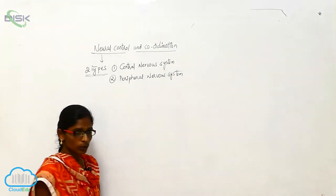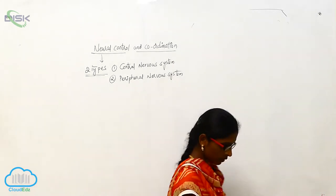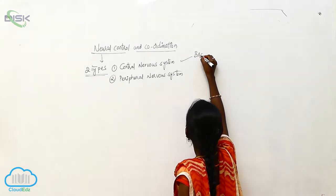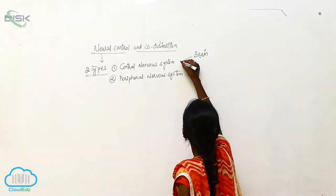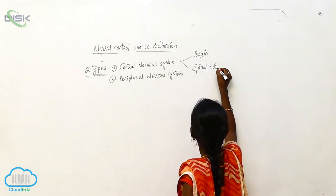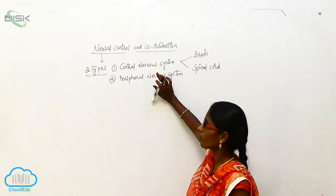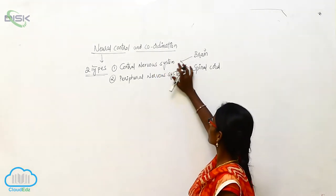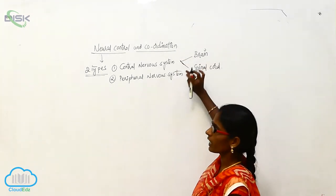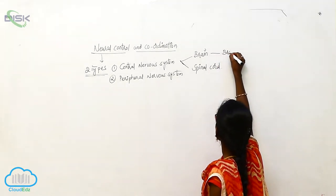The Central Nervous System consists of two parts: the Brain and the Spinal Cord. The Brain is covered by the Brain Box.